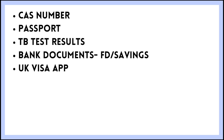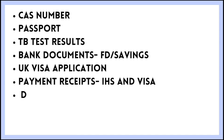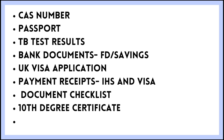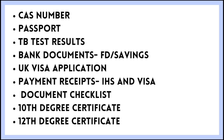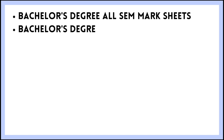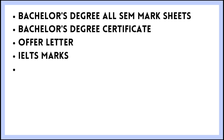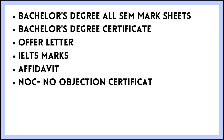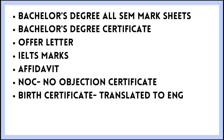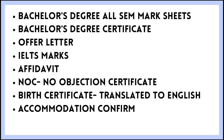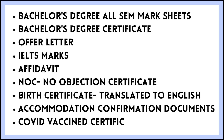Even before you get your CAS number, I recommend starting to gather your documents — go to the bank, make sure everything is in process — because otherwise it will delay things further. Before going into detail about the TB test, bank statements, and the visa form, here's a list of everything you'll need on the day of your visa application. Take a screenshot or come back to this video when you need it. Things like an affidavit may or may not apply depending on your situation.